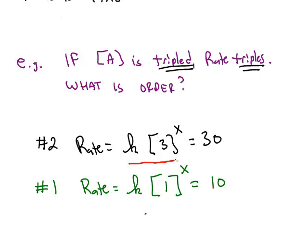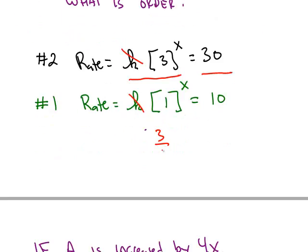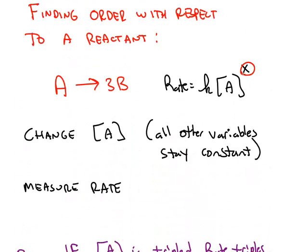We can cancel out some of these constants if we set up a ratio. K will cancel with K, and we're left with 3 over 1 to the x power equals 3, or 3 to the x equals 3. From that we know that 3 has to be raised to the first power for it to equal 3. So the tripling of the concentration triples the rate. That means the order with respect to chemical A, this variable x, would be 1.